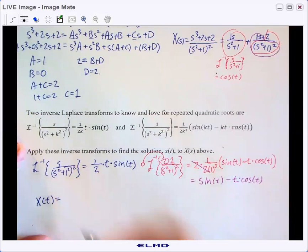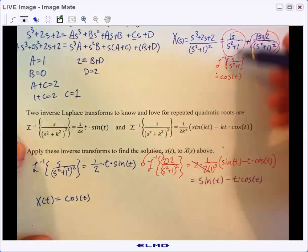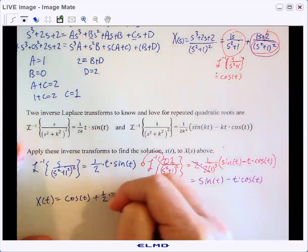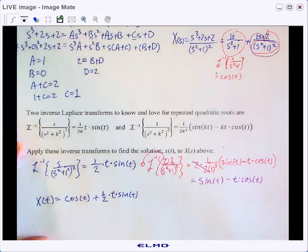So X of T, our final answer would be cosine of T coming from the first term, plus one half T sine of T,